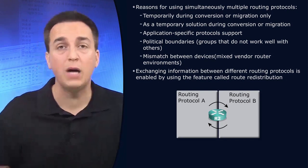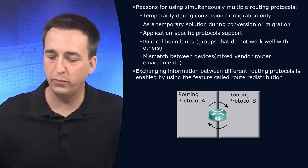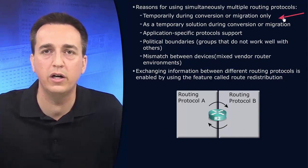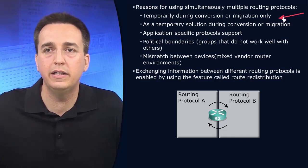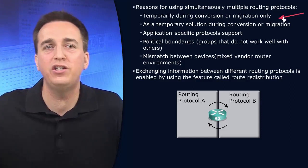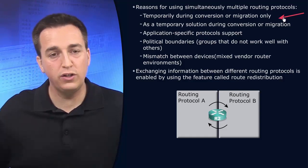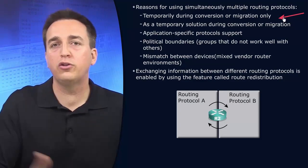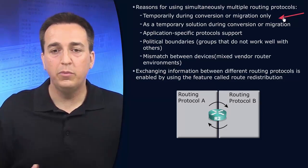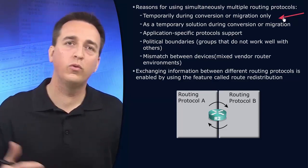It might not even be one of the options that are listed here. But one of the reasons that you might be performing redistribution is because you are doing a migration of some type — migrating your routing protocols. For example, you might have an environment that is OSPF and you are transitioning over to EIGRP. In that case, you need to continue running the old routing protocol while you are transitioning slowly to the new routing protocol. Therefore, both are going to be running at the same time, but you still want full connectivity. And in order to get full connectivity, you need to share information from one routing protocol to another.